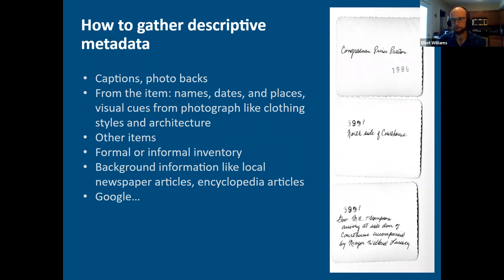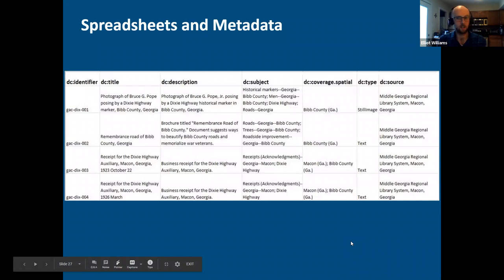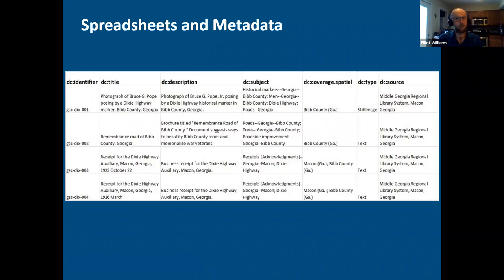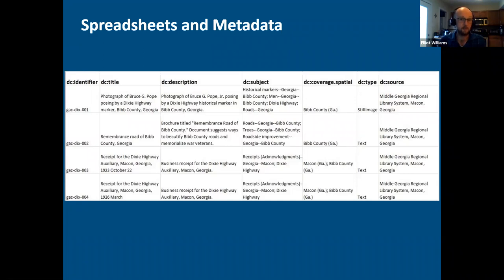A really useful tip: learn spreadsheets and get comfortable using them for metadata creation. You'll often notice when working on a collection that you'll repeat the same information for every element — like format or type, or when everything is created by the same person — so instead of typing that out over and over, you can fill down a spreadsheet and save yourself a lot of time. Spreadsheets are also great for proofreading: you can scan down rows to identify typos, filter, and do spell checks in ways that digital collection systems often don't allow. I definitely recommend learning Excel, Google Sheets, and OpenRefine — really powerful tools for working with metadata.